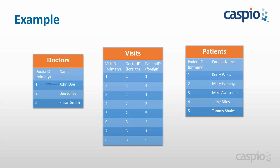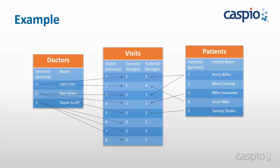For example, looking at John Doe — John Doe had two visits, from patient one Carrie Wiles and patient four Jesse Niles. Ben had three visits: one from Carrie Wiles, one from Mike Awesome, and one from Tammy Shales. So now we know that Carrie visited two doctors. Susan Smith also had three visits — from Mary Evening, Carrie Wiles, and Tammy Shales. This illustration shows us that we can now track what patients visited what doctor, and a patient can belong to more than one doctor.